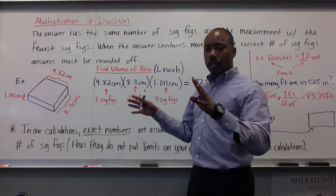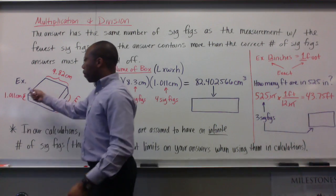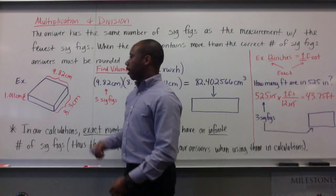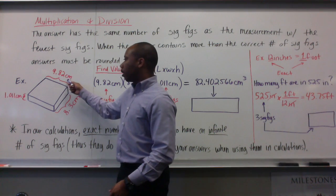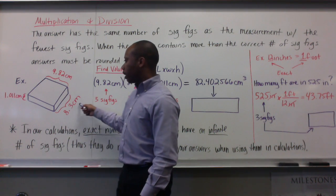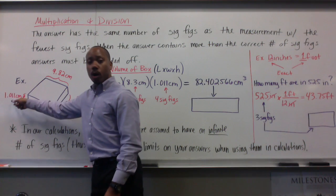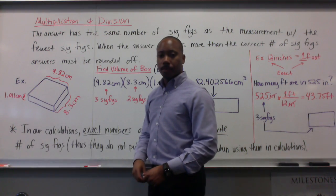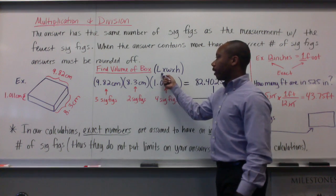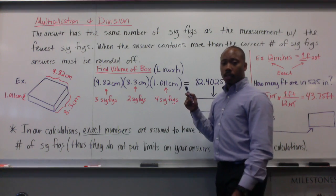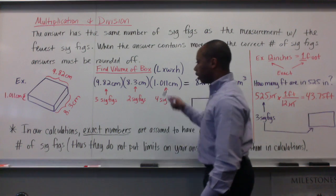Here's our example. This board is kind of cluttered, so please follow along. We are going to measure the volume of this box. My length is 9.8 cm, my width is 8.3 cm, my height is 1.011 cm. To find the volume of a box, we use length times width times height.